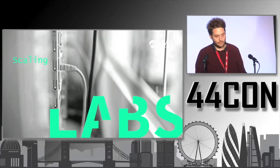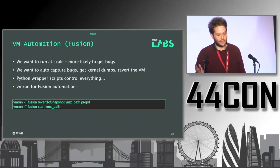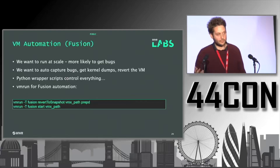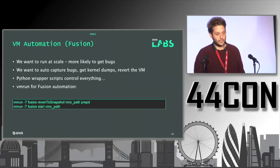Next is how we went about scaling up the fuzzing. We want to run this at scale because you're much more likely to find bugs. We also want a click-and-let-it-run approach — capturing bugs, grabbing kernel dumps, reverting the VM, and continuing fuzzing without babysitting the fuzzer. We have a bunch of Python scripts controlling everything. In Fusion, we make heavy use of VMRun — VMware exposes a nice API so we can give it a VM, snapshot it, copy the fuzzer binary across, set up logger stuff, set up panic daemons, and just let it run.